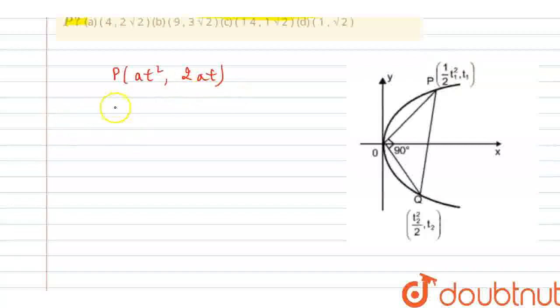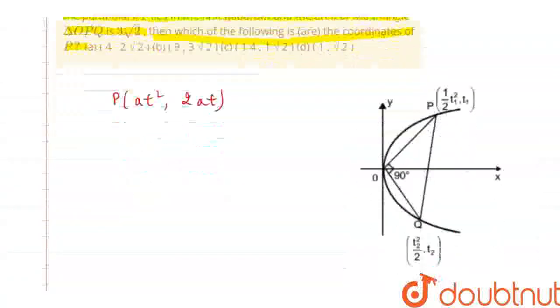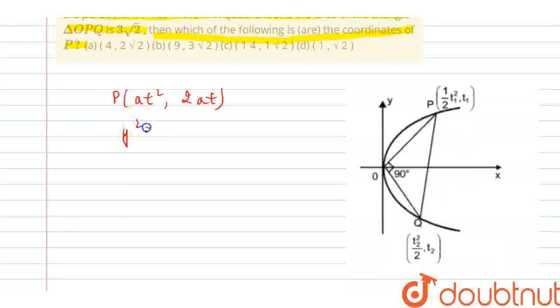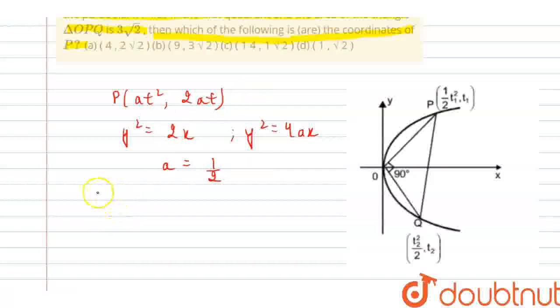Since we know that the parabola is given as y square is equal to 2x. If y square is equal to 2x, comparing it with the standard equation of parabola, that is y square is equal to 4ax, we get to know that a is equal to 1 by 2. Substituting it in point P, we get the coordinates of point P as half of t1 square, comma, t1.